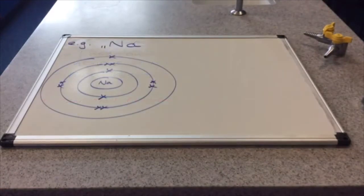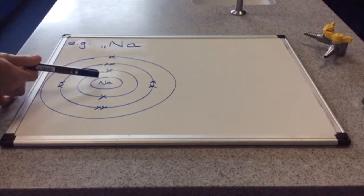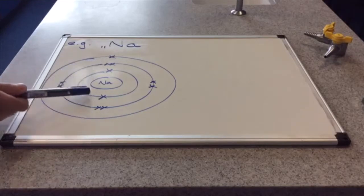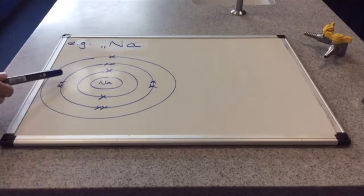I'm going to demonstrate what metals do in terms of electrons with sodium. So we've got sodium on the board there. It has an atomic number of 11. Therefore, it has 11 protons in its nucleus. And to keep the atom neutral, it must have 11 electrons in the outer shells. And they are arranged two in the first shell, eight in the second shell, and one in the third shell.